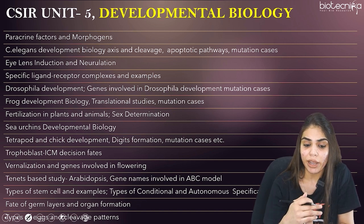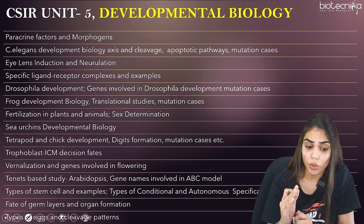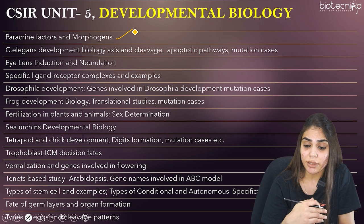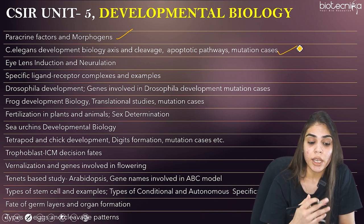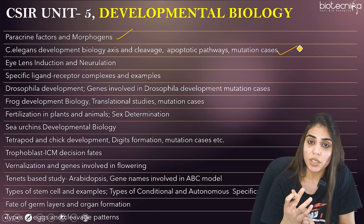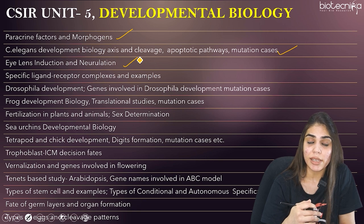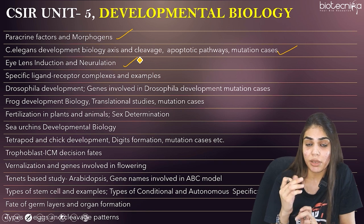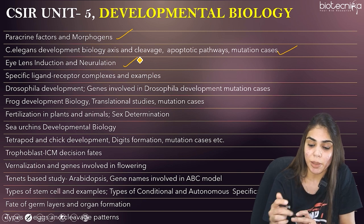Know morphogen importance, C. elegans developmental biology — its axis, cleavage, apoptotic pathway, and mutation cases. Learn how vulval induction is done and the specific importance of PAX-6 protein. Also know specific ligand-receptor complexes and examples, as incorrect match questions may be asked.